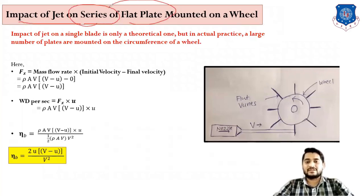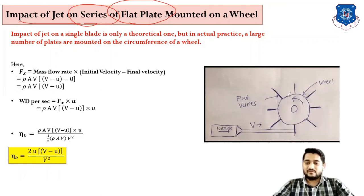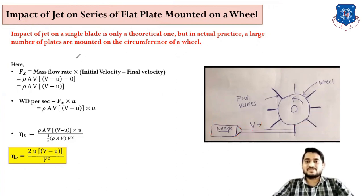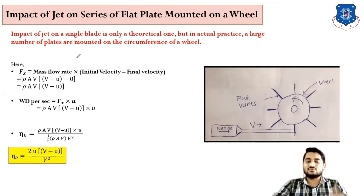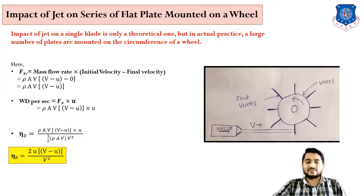In the case of impact of jet on series of flat plate, efficiency will be 50 percent. Let us draw a sketch — this is a wheel where flat vanes are mounted. From the nozzle, a jet is coming with velocity V, and U is the velocity of the blade. Impact of jet on a single blade is only theoretical; in actual day-to-day life there is no single plate in any machine, so there are a large number of plates mounted on the circumference of the wheel.